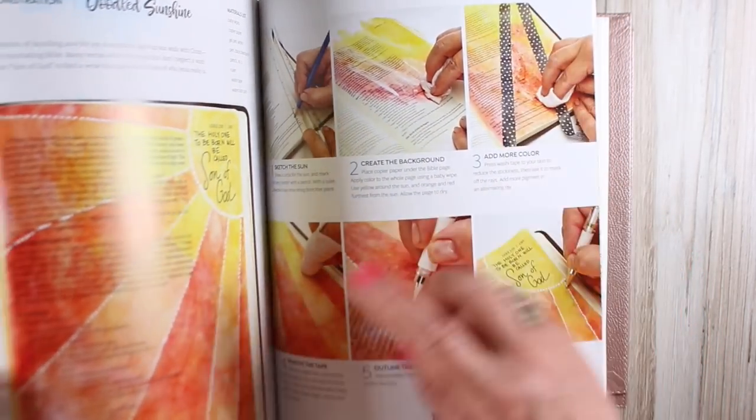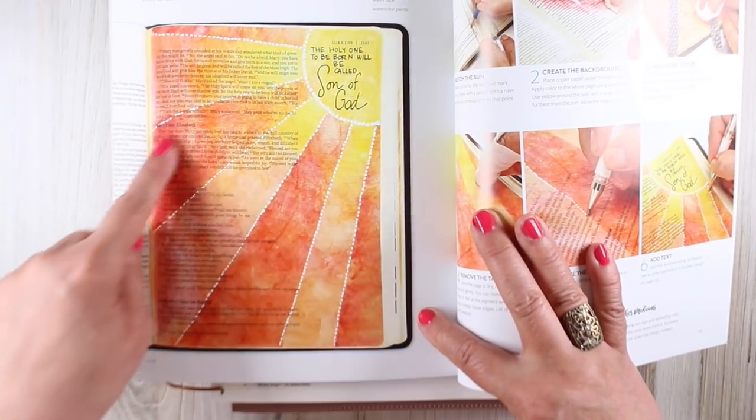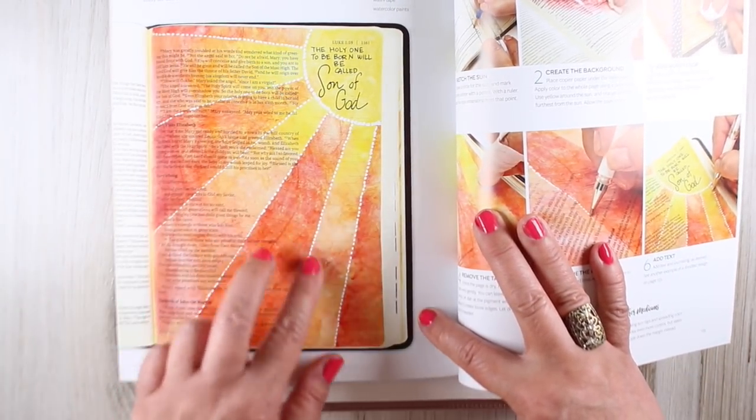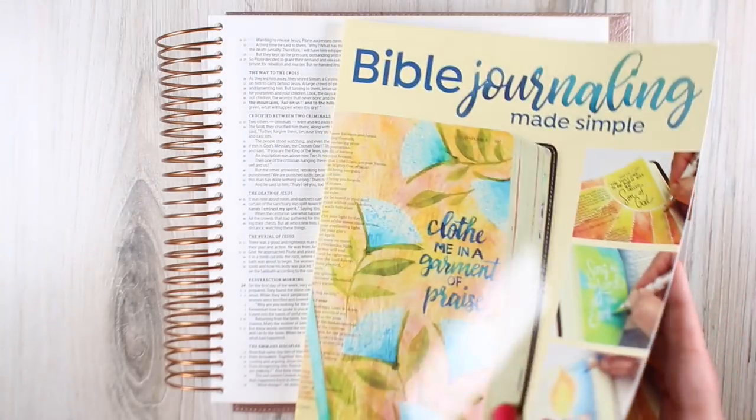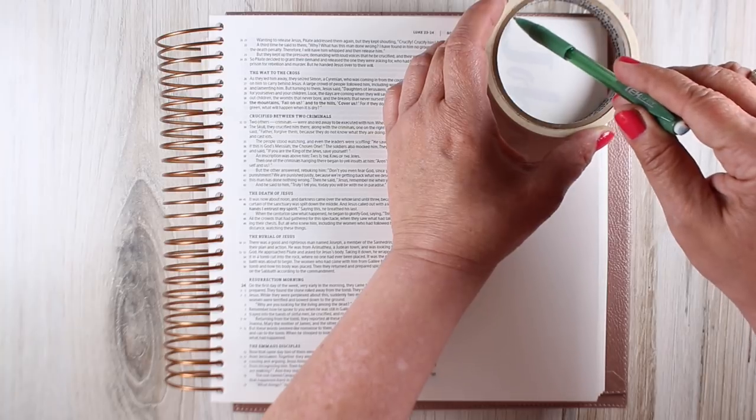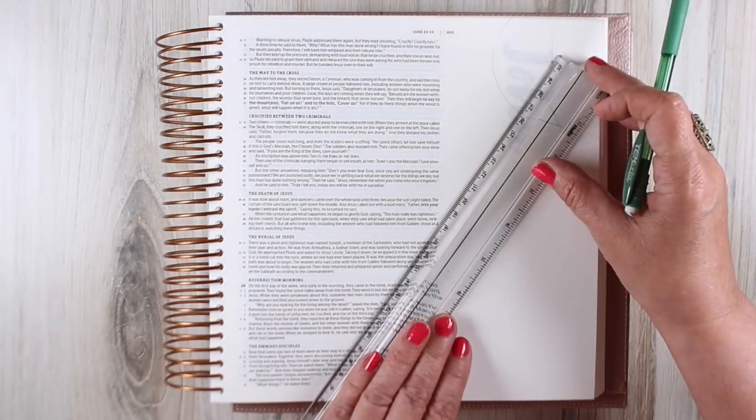In the book it shows you how to make this doodled sunshine by making large, very simple stripes of color. I wanted to show you how you can make more complex sections of color to make it look like stained glass.